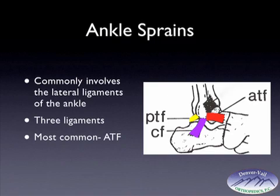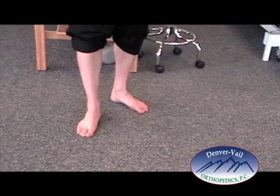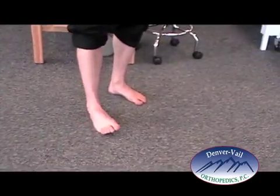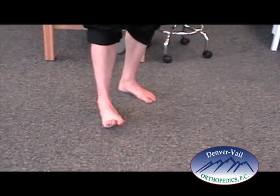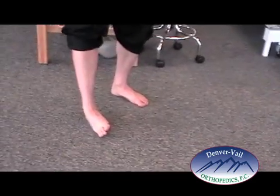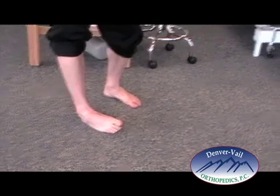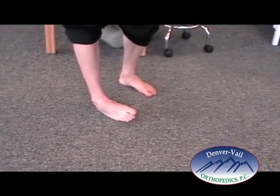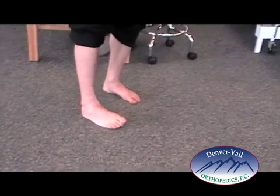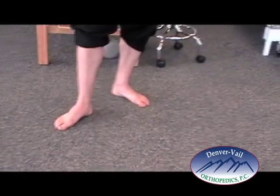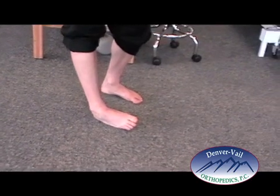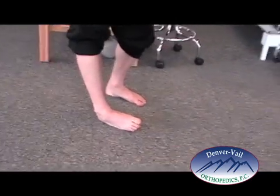Most mild to moderate ankle sprains involve the anterior talofibular ligament. As the sprain becomes more severe, it will involve the calcaneal fibular ligament, and less commonly the posterior talofibular ligament. Most ankle sprains occur with a stopping or twisting injury, and the ankle and foot will go into an inverted or turned-in position, as Wes is showing here.